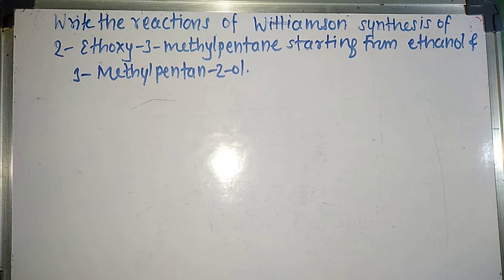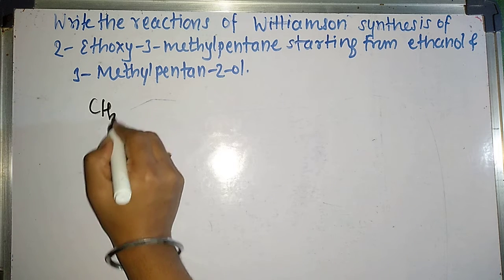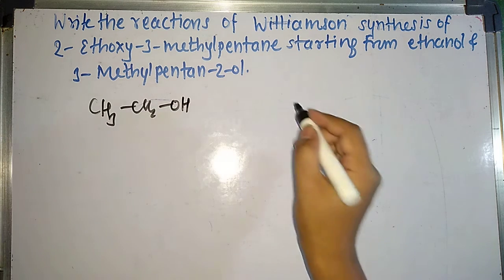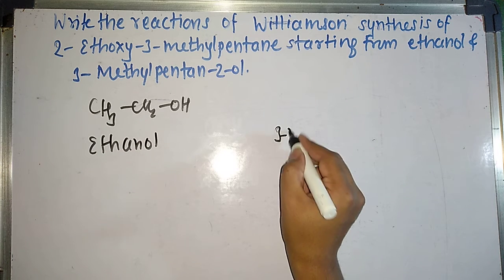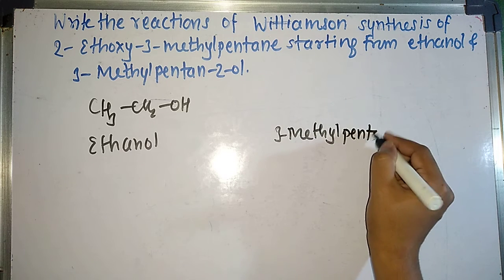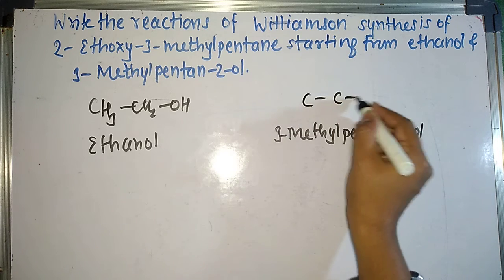So the next question is: write the reactions of Williamson synthesis of 2-ethoxy-3-methylpentane starting from ethanol and 3-methylpentan-2-ol. So what is given to us, starting compound as ethanol? What is the formula of ethanol? CH3-CH2-OH. What is the other compound? Other compound is given to us as 3-methylpentan-2-ol. So draw the structure of 3-methylpentan-2-ol. Pentane means 5 carbon atoms: 1, 2, 3, 4, 5.